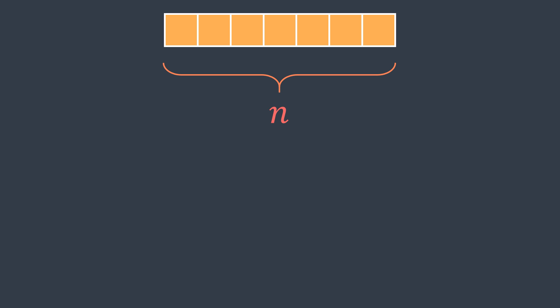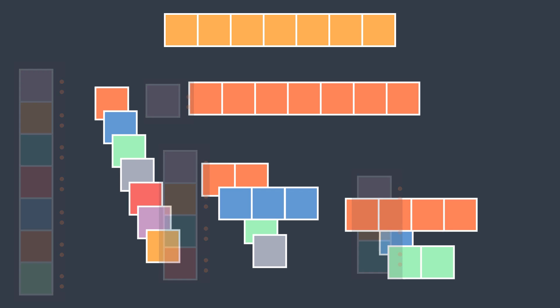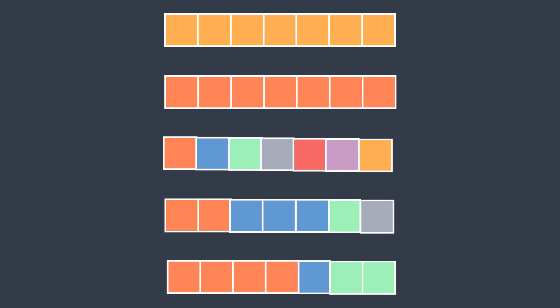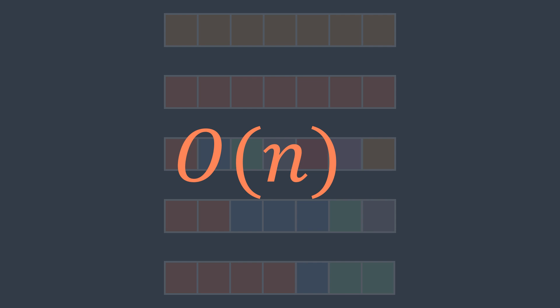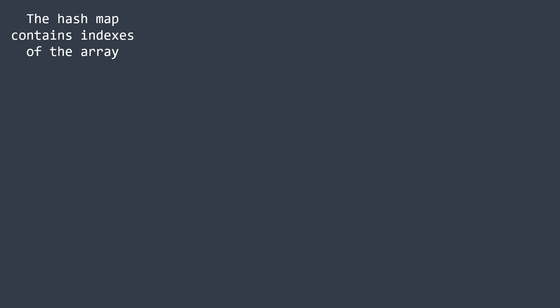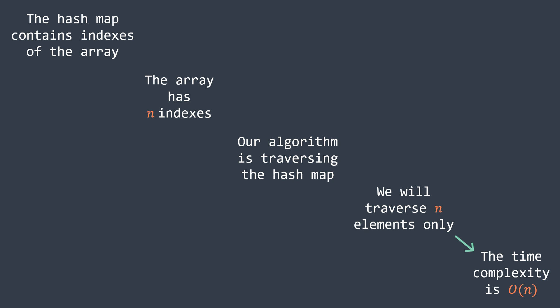So no matter how the hash map is organized, the total number of elements will always be n. We will always traverse n elements only. This is why the time complexity is O(n) and not O(n²). To recap: the hash map contains indexes of the array, the array has n indexes, our algorithm is just traversing the hash map, so we traverse n elements only — the time complexity is O(n).